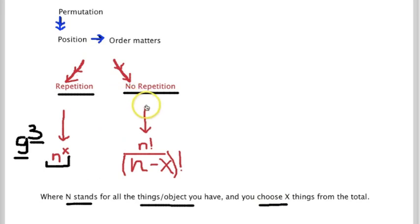If repetition is not allowed, then you can use this formula right here. So for example, if you have nine numbers, but the code does not let you repeat a number, and it's a four-number code, then you would basically have n factorial over (n-x) factorial. So that's for permutation.